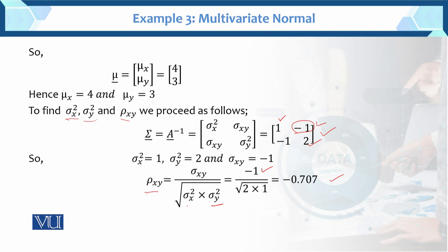The range of correlation is minus 1 to 1, so the value minus 0.707 exists within that range. This is the value of the correlation.